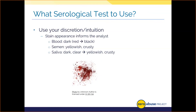Semen may be dark and almost clear or translucent, or crusty and yellowish or brown, depending on the depositing surface, age, and concentration. Saliva is a mixed bag visually — it can be clear, dark, or yellow. If the analyst is ever in doubt on a stain, they'll consider going straight to DNA. If there isn't enough material, the stain is too dilute or too small, or if serological testing is simply not a priority for that item, they'll proceed accordingly.